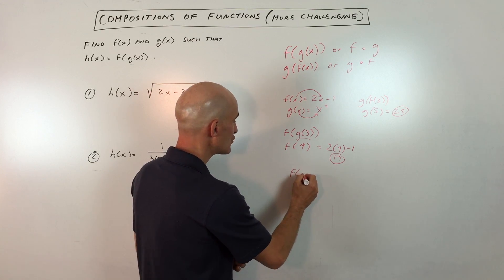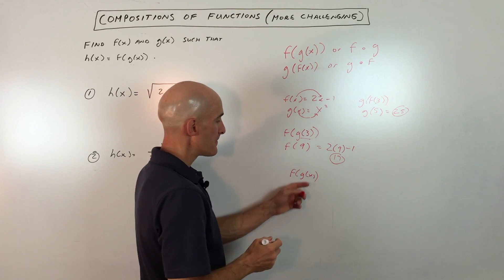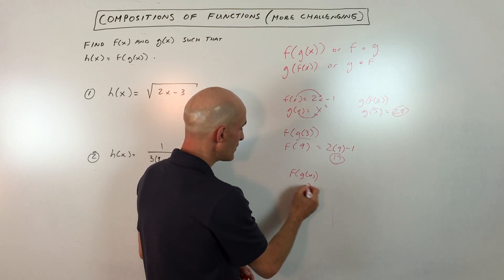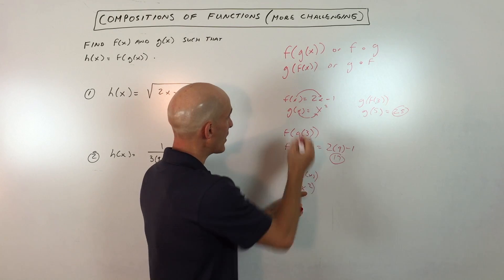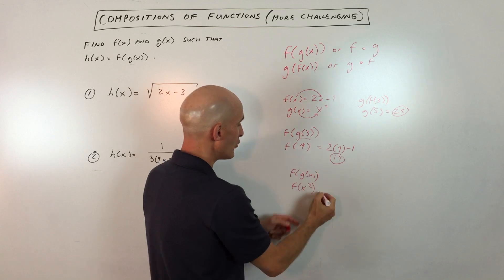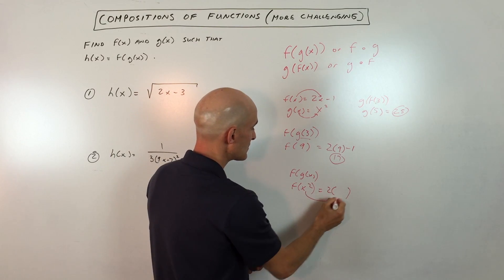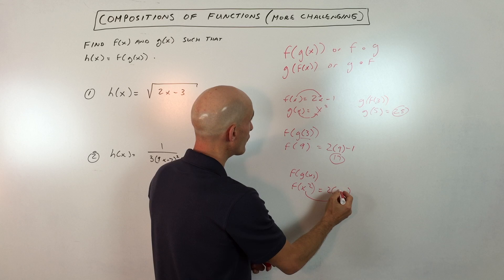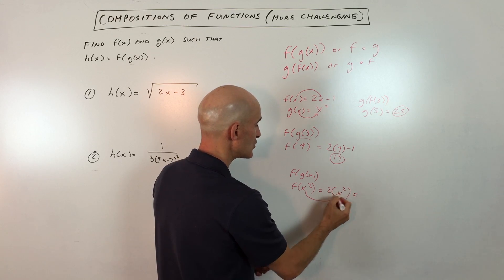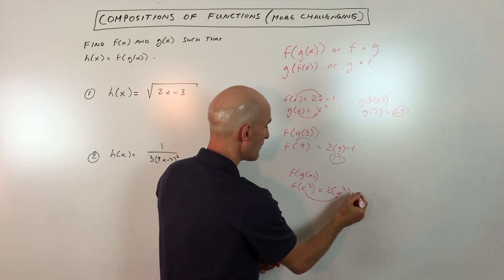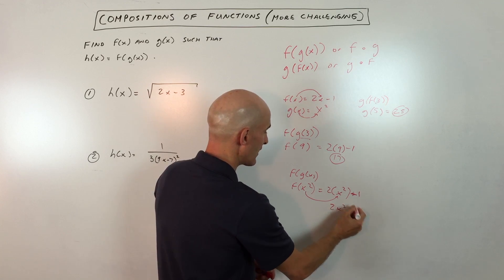Say we want to do f(g(x)). Since g(x) = x², we have f(x²). Whatever's in the parentheses is the input that goes in place of x on the right side of the equation. This becomes 2(x²) - 1, which simplifies to 2x² - 1.